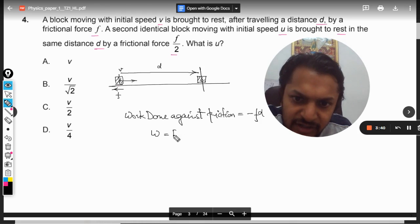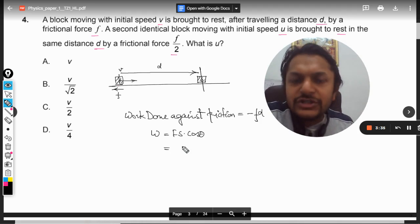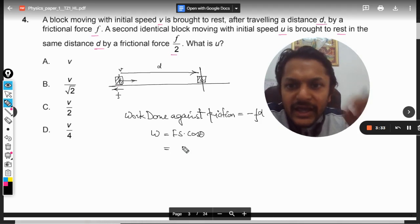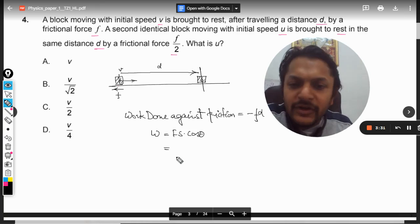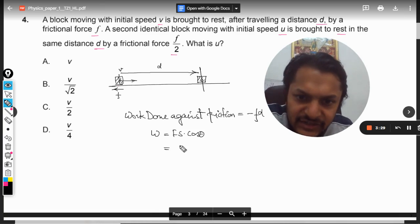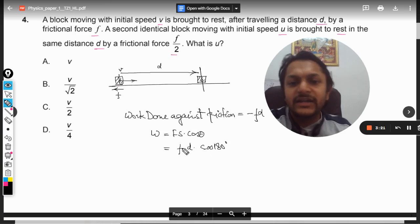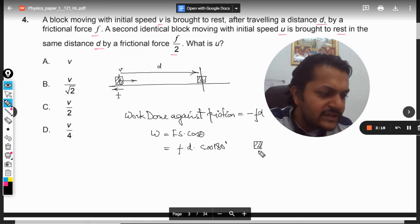See, the general formula of work is F into S cos theta, where F is the force acting on the body. In this case, there is only one force acting and that is friction. The distance traveled will be taken as D, and the angle between these two is 180 degrees.